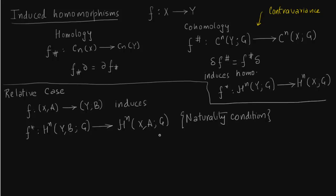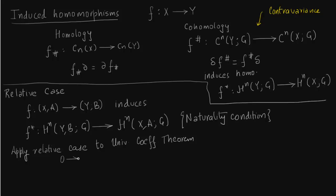We now apply this relative case to the universal coefficient theorem, which will also give us a commutative diagram. For all of this we are just applying what we have already done in homology to cohomology. The only differences are: number one, instead of homomorphisms between homology groups we have homomorphisms between cohomology groups; and number two, there is contravariance, so instead of going from X to Y we always go from Y to X.